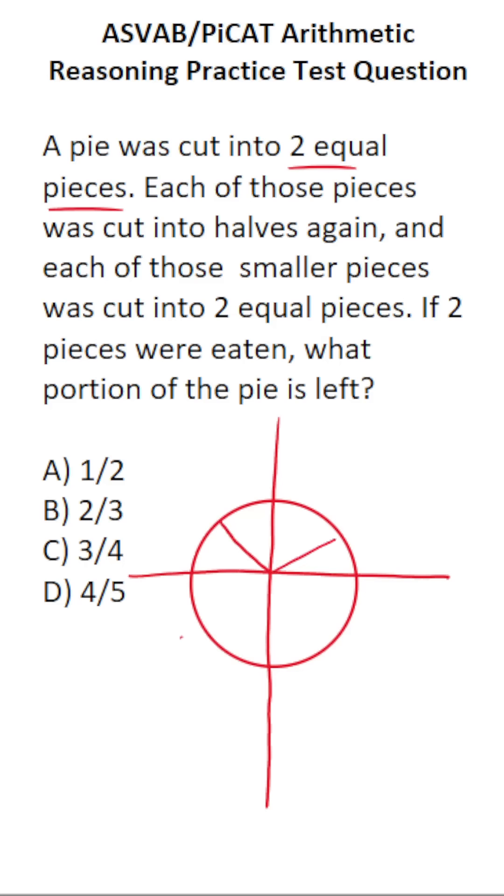Half there, half there, half there, and half there. So we just divided our pie up accordingly. How many pieces do we have in total? We have one, two, three, four, five, six, seven, eight pieces.